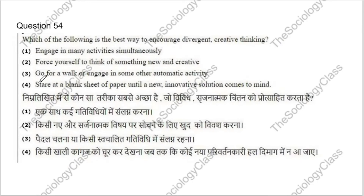Question 54: Which of the following is the best way to encourage divergent creative thinking? Options: engage in many activities simultaneously; force yourself to think of something new; go for a walk or engage in some other automatic activity; or stare at a blank sheet of paper. The correct answer is C — go for a walk or engage in some other automatic activity.